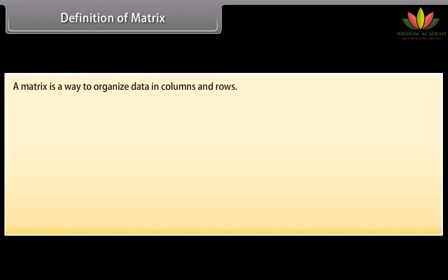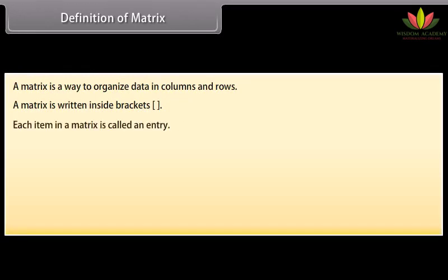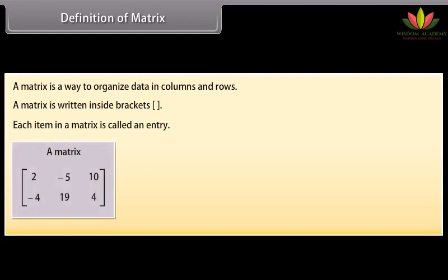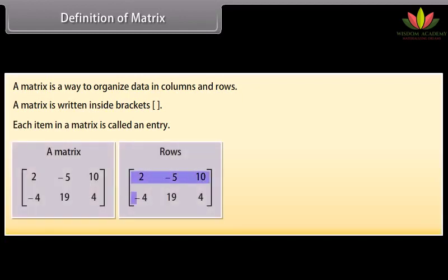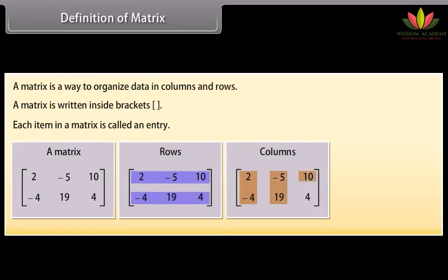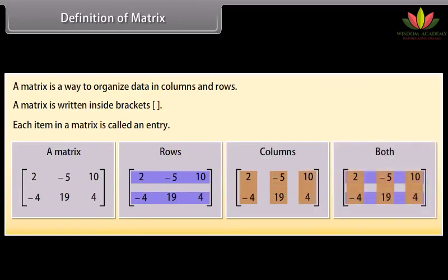Definition of matrix. A matrix is a way to organize data in columns and rows. A matrix is written inside brackets. Each item in a matrix is called an entry. Look at this matrix — it has two rows and three columns. The entries of the matrix are 2, −5, 10, −4, 19, 4.